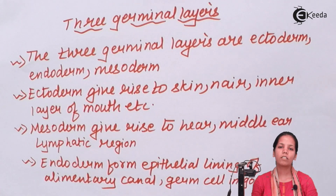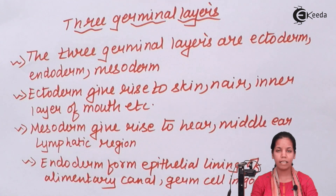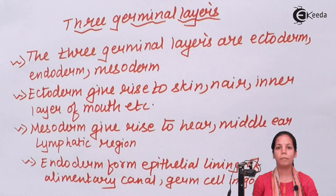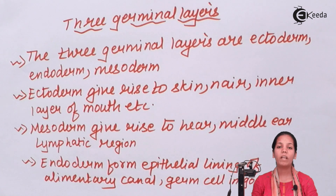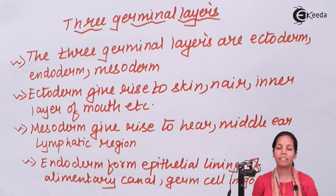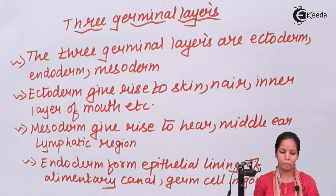Once the process of fertilization has taken place, there is a formation of three major germ layers. These three major germ layers will eventually form the different parts of your body — the nerve cells, the respiratory system, the endocrine system, etc.